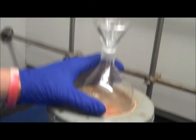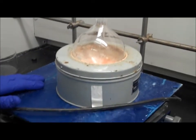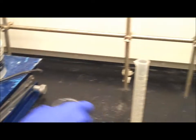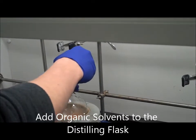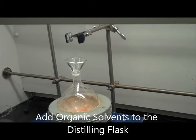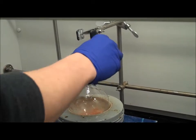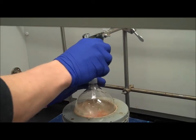The first step to setting up your distillation: you have your distilling flask inside the mantle, which is on the jack. To add your chemicals, we have 25 milliliters of acetone into the distilling flask. You can use a funnel to ensure that you don't spill any chemicals.